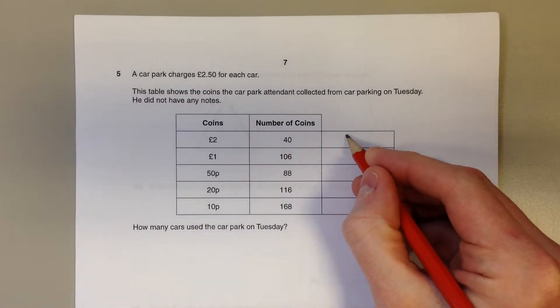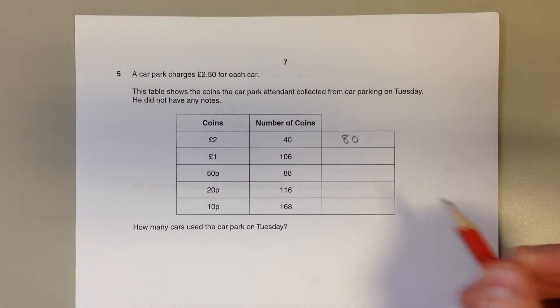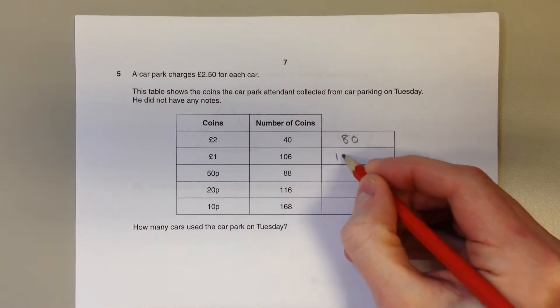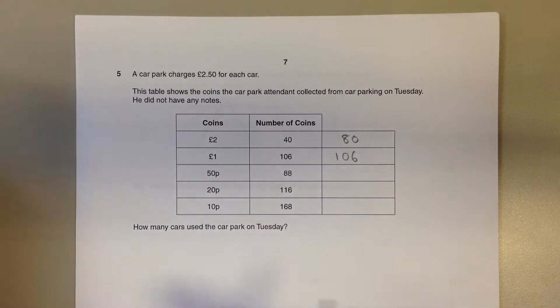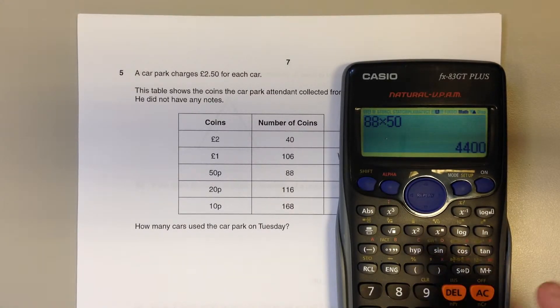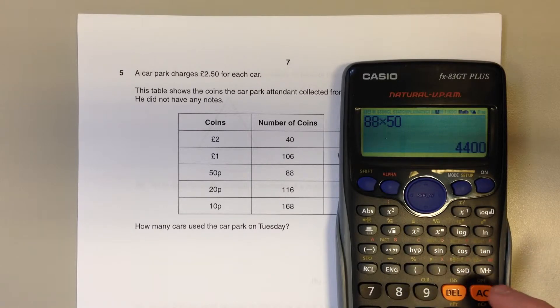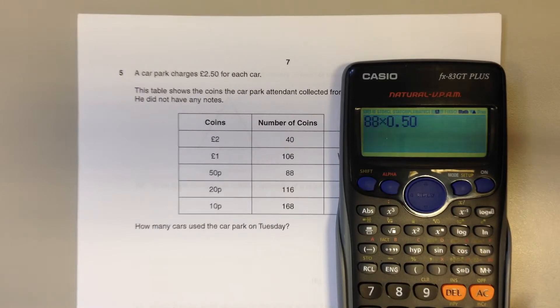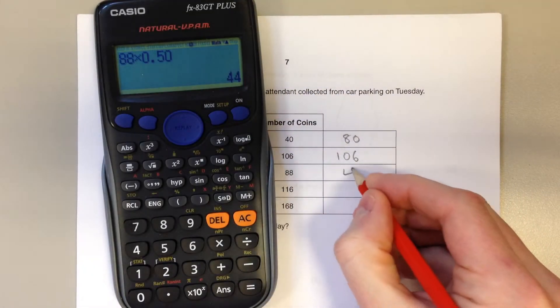So 40 £2 coins means a total of £80. 106 £1 coins is £106. Be careful with the next one. We've got 88 lots of 50p, which is 4400 pence. So either convert that into pounds or do 88 lots of 0.5. That's £44.